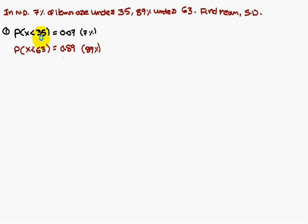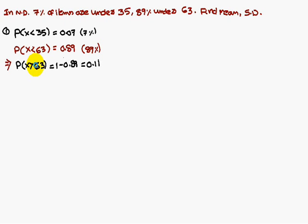In solving this type of problem, always one condition should be in terms of less than and the other should be in terms of greater than. Here x less than 35 and x less than 63 are both less than. So convert x less than 63 into x greater than 63, which is 1 minus 0.89 = 0.11.